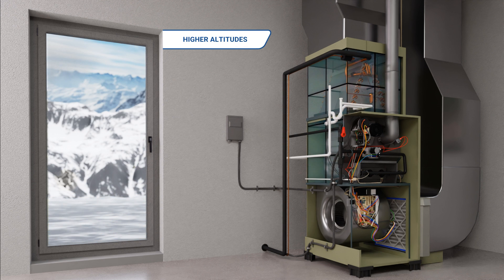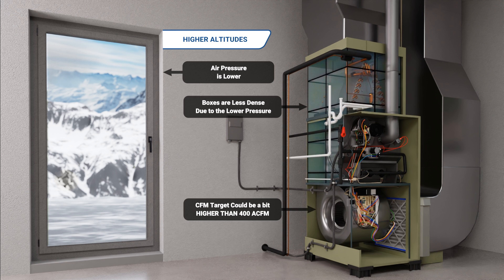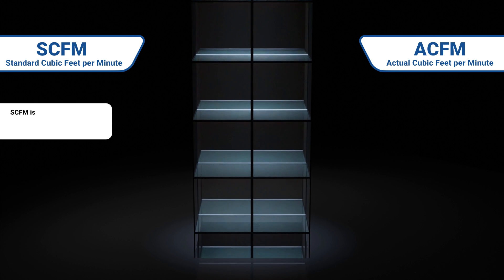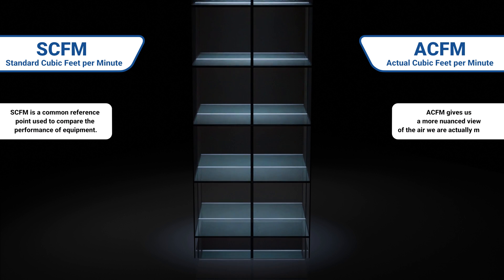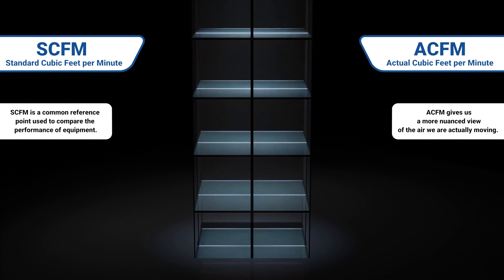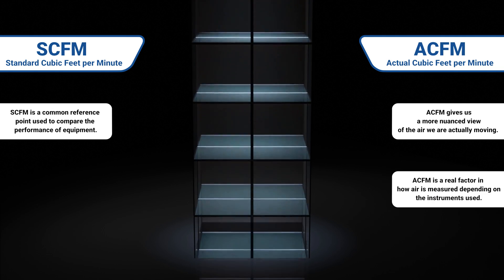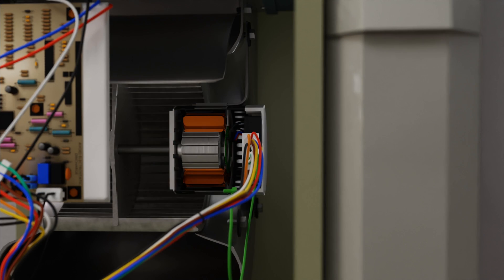These same concepts apply to air at higher altitudes. The boxes of air are less dense due to the lower pressure at high altitudes, so the ACFM will likely need to be higher at those upper altitudes due to the lighter air. It also makes a big difference what type of blower motor is in the equipment and how the weight of air impacts the blower's performance.